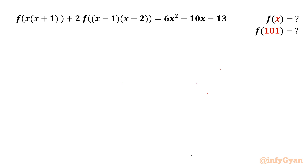Welcome back to Infigyan, my dear friends. In today's video we are going to solve one functional equation for the value of f(x) and f(101). Given that f(x) is mapped real to real. The equation is f(x)·(x+1) + 2·f(x-1)·(x-2) = 6x² - 10x - 13. Let me call this equation number 1.